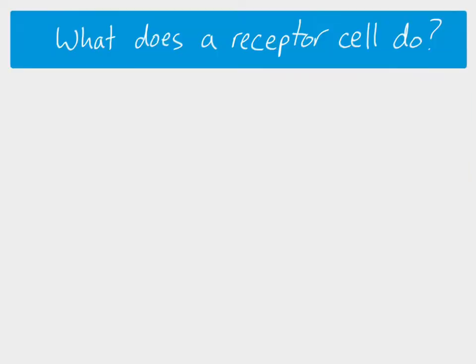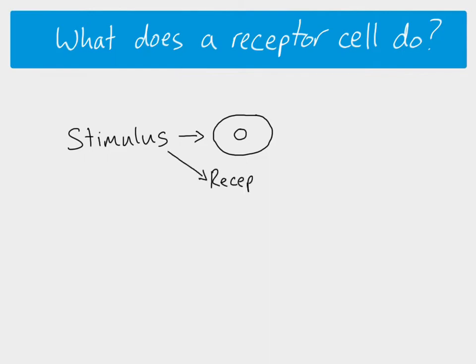In terms of receptor cells, as an overview, a receptor cell basically takes a stimulus. That stimulus is some change in the environment - it could be light, heat, pressure, pH, or the presence of various chemicals and ions. That stimulus is then detected by the receptor cell and it will cause a receptor potential.